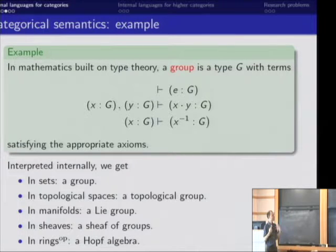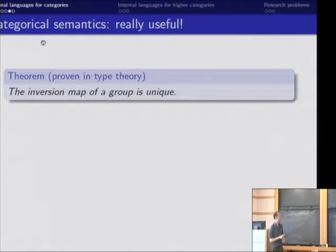Moreover, all sorts of theorems that we could prove about groups inside of type theory are still true in all of these other models. So for instance, we can prove inside of type theory that the inversion map of a group is unique. And then it follows automatically that in any model of the type theory in any category, the inversion map of the corresponding group object is unique for topological groups, Lie groups, and so on.